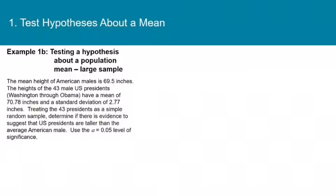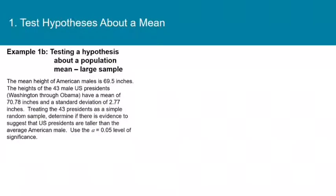Here is our first example. The mean height of American males is 69.5 inches. The heights of the 43 male U.S. presidents, Washington through Obama, have a mean of 70.78 inches and a standard deviation of 2.77 inches. Treating the 43 presidents as a simple random sample, determine if there is evidence to suggest that U.S. presidents are taller than the average American male. Use the alpha equals 0.05 level of significance. Since n is greater than 30, we can use the t-test. The null hypothesis is mu equals 69.5, and the alternative hypothesis is mu greater than 69.5.